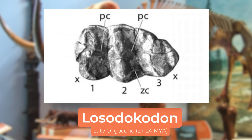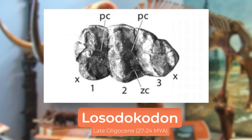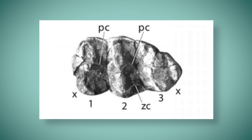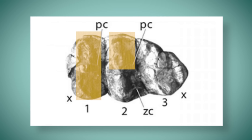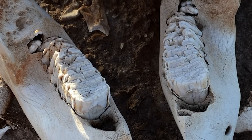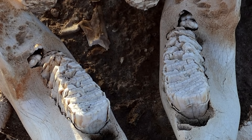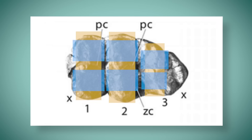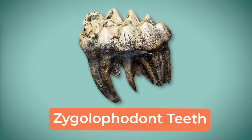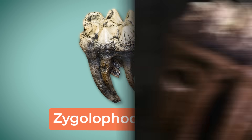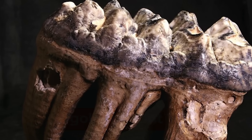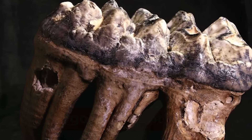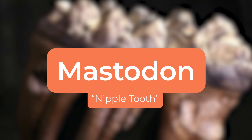How Losodocodon looked in life isn't well known since all we have are teeth, but it's that dentition that shows us key characteristics of Mastodons as a whole. Its molars consisted of thick, rounded, bumpy cusps, as opposed to the flattened ridges we see in Elephantidae. The cusps are found in pairs with a deep valley between them — a zygolophodont morphology emblematic of Mammutidae. This is actually the reason behind the common name, as Mastodon roughly translates to nipple tooth or breast tooth.